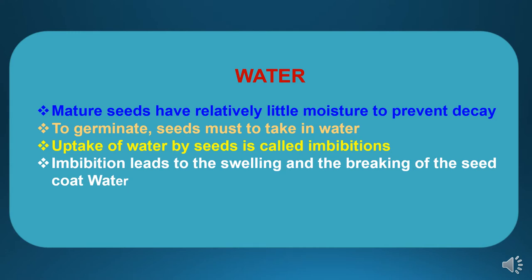Water is one of the important factors covering seed moisture and soil moisture. Mature seeds have relatively little moisture to prevent decay. If the seed has optimum moisture conditions, it will prolong the life of the seed, vigor will be excellent, and there will be good germination. If moisture is on the higher side, there will be decay in seeds, spoiling seed quality and storage lifespan. To germinate, a seed must absorb water — this uptake of water by seeds is called imbibition. Imbibition leads to swelling and breaking of the seed coat, after which germination takes place with the combination of temperature and other factors.